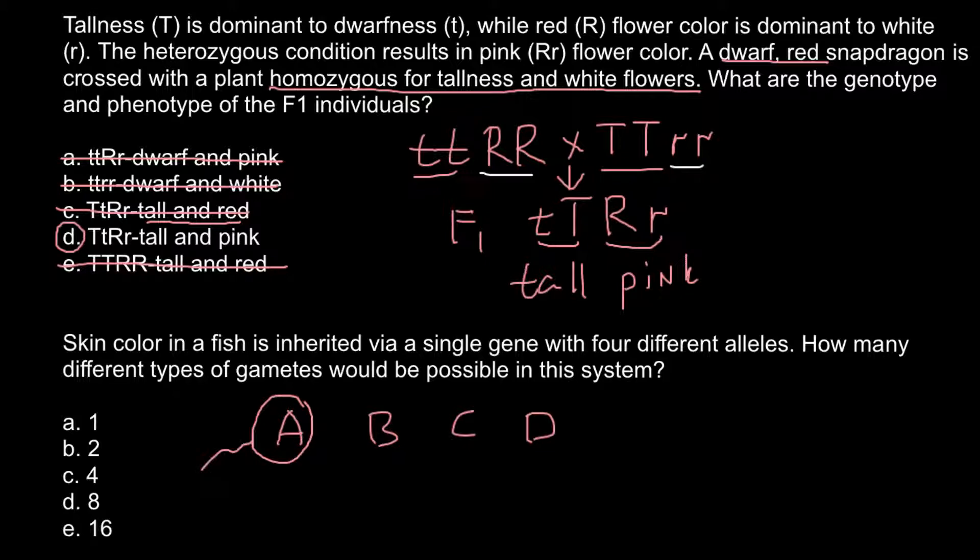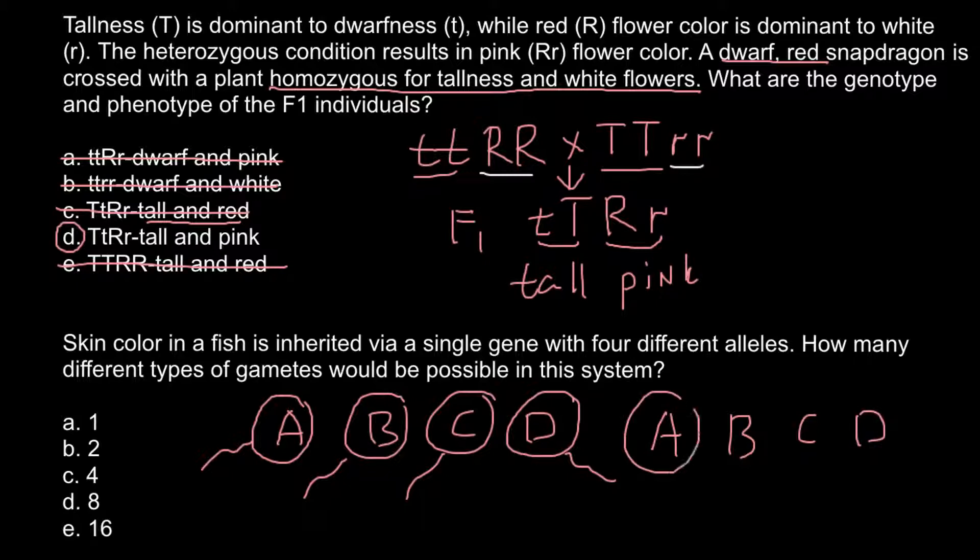Only four haploid variants can be made. For example, for the sperm it can be A, B, C, and D. So four variants, and the same four variants for the egg cell: A, B, C, and D.